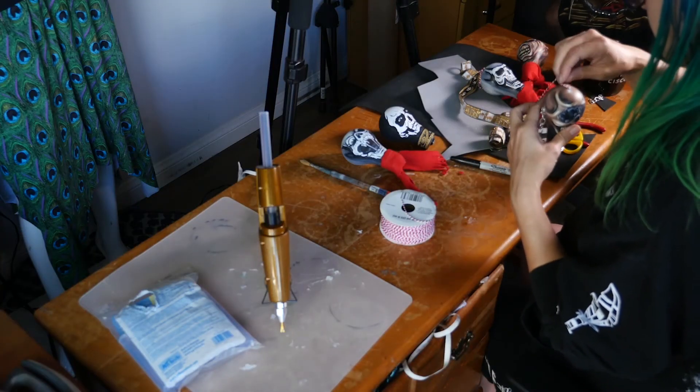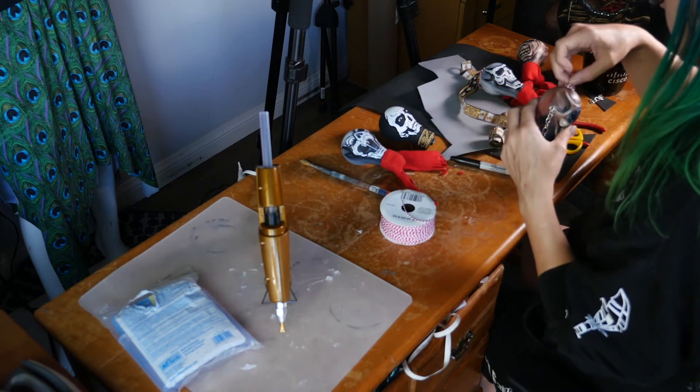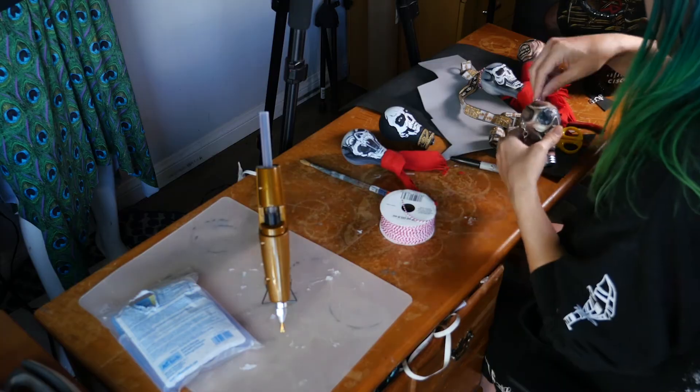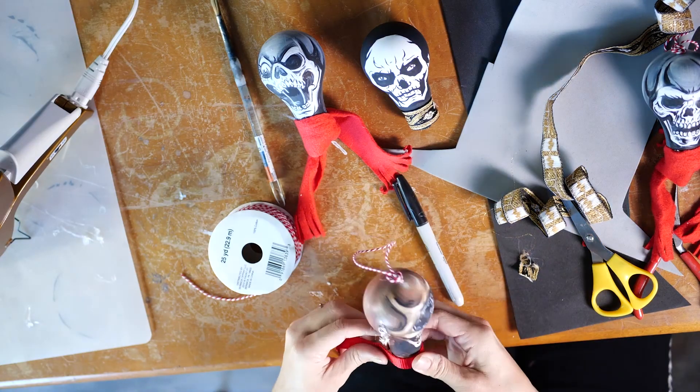So we're going to cut a little piece. Put a dab of hot glue on the very top of the head. And then we're going to twist around in a circular motion. And then we're just going to put the very end piece down and let it dry.